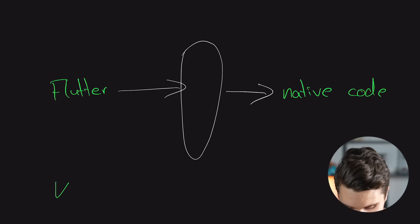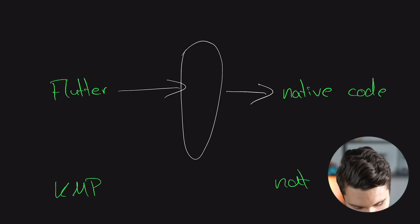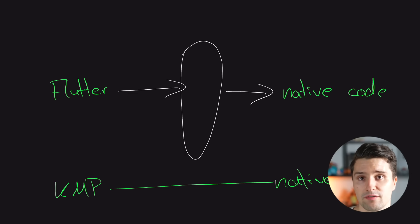By skipping that bridge layer and compiling directly to native code, KMP apps are more performant. This is really unique to Kotlin Multiplatform — there is no other cross-platform framework that allows us to call native system APIs directly in the cross-platform code itself.